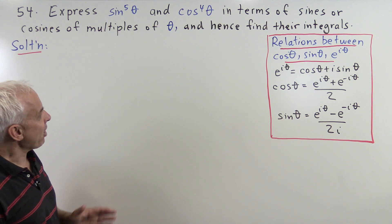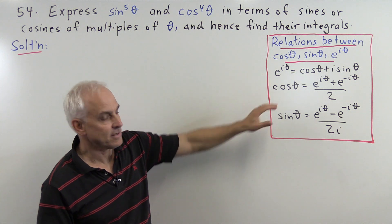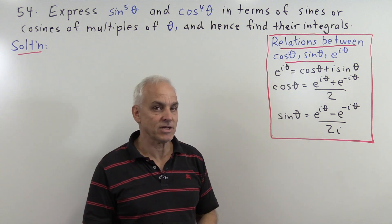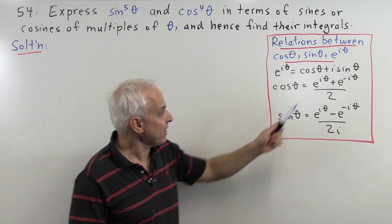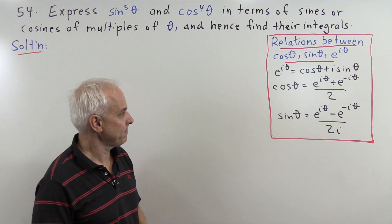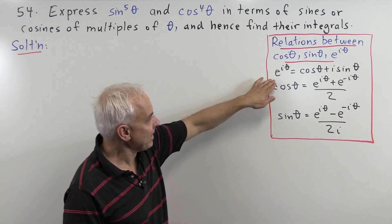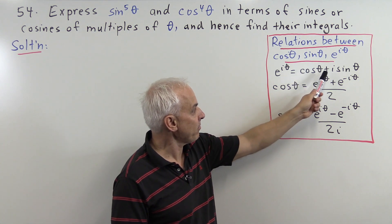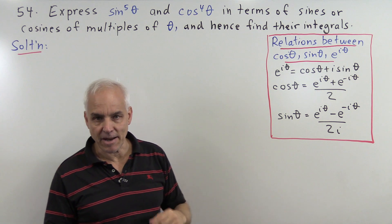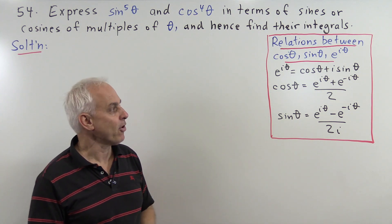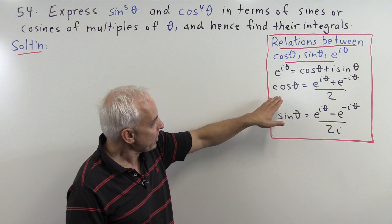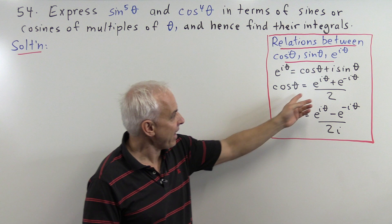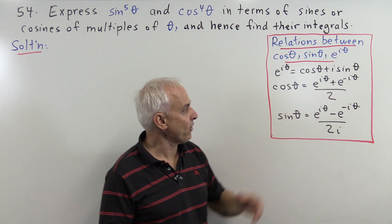So this problem involves, very importantly, these fundamental relations between the circular functions cos theta and sine theta and the complex exponential e to the i theta. I remind you that e to the i theta is a convenient short form for cos theta plus i sine theta and represents a complex number on the unit circle. We can express cos theta in terms of e to the i theta and e to the minus i theta — it's just the average of those two.